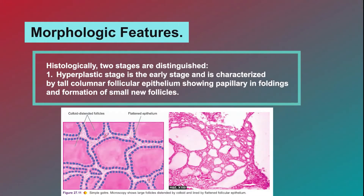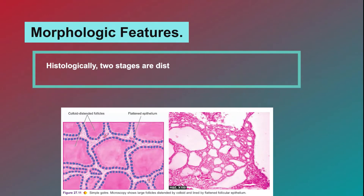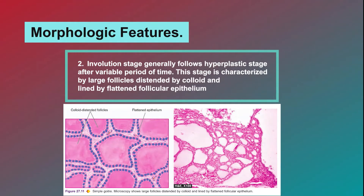Morphologic features. Histologically, two stages are distinguished. First, the hyperplastic stage, which is the early stage, characterized by tall columnar follicular epithelium showing papillary enfoldings and formation of small new follicles. Second, the involution stage, which generally follows the hyperplastic stage after a variable period of time. This stage is characterized by large follicles distended by colloid and lined by flattened follicular epithelium.